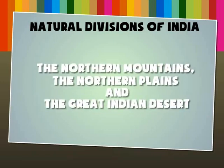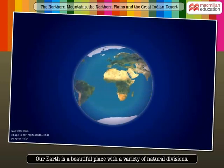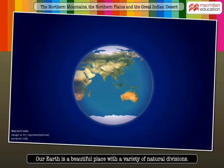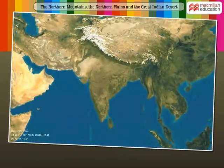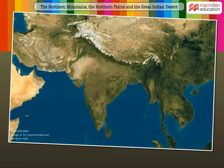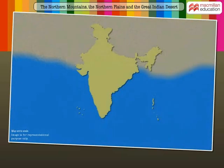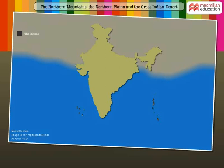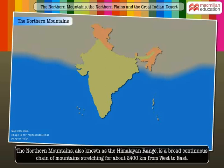Natural Divisions of India. Our Earth is a beautiful place with a variety of natural divisions. Today, let us take a look at the natural divisions of India, which are the Northern Mountains, the Northern Plains, the Indian Desert, the Peninsular Plateau, the Coastal Plains and the Islands.